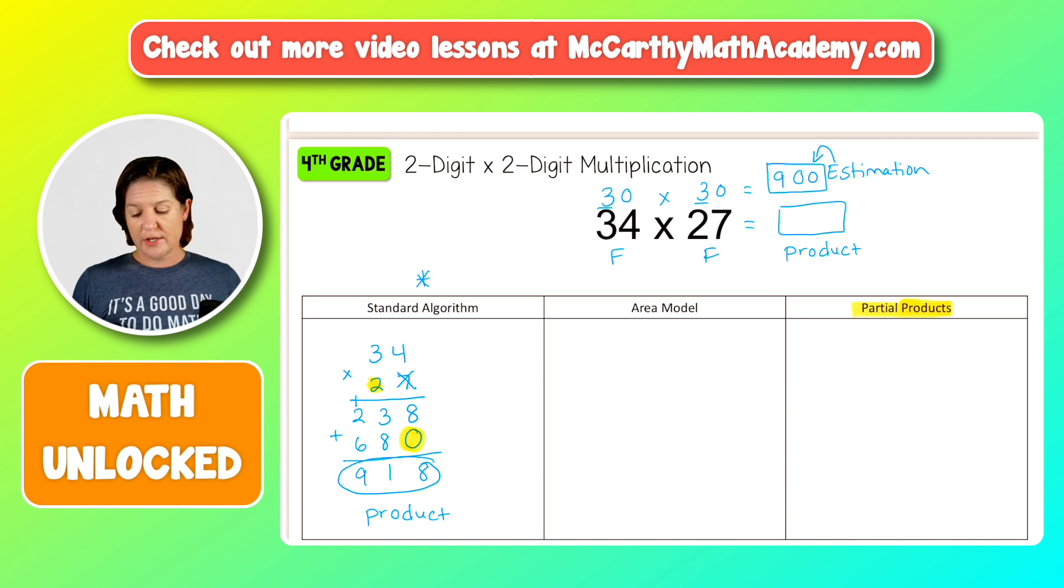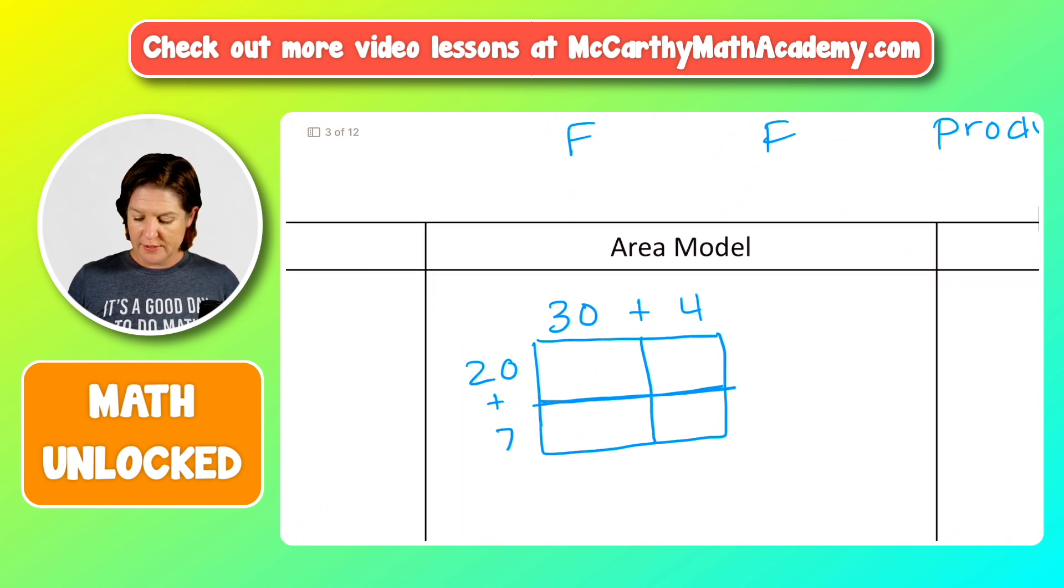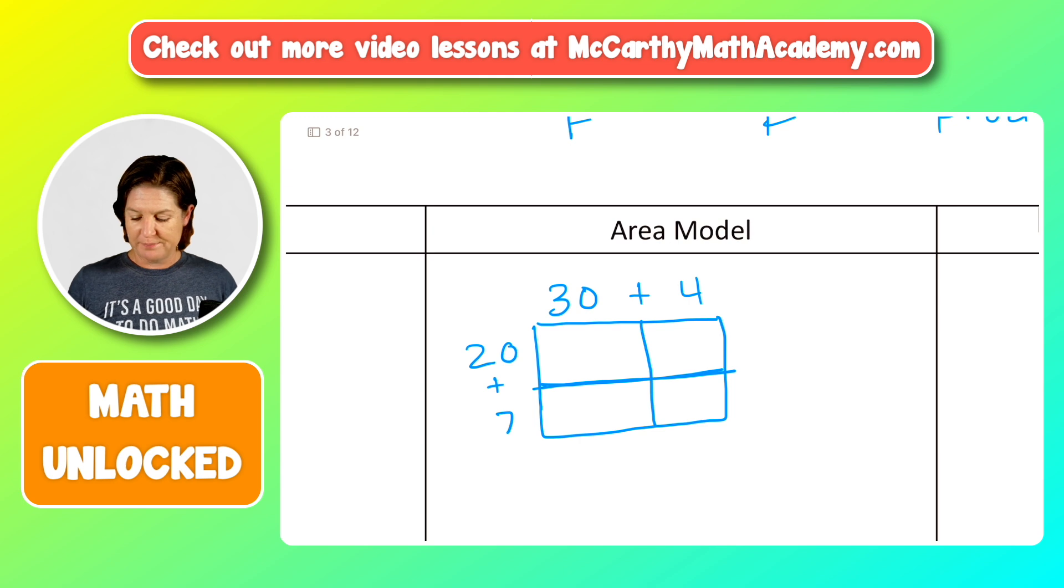There are two other strategies though, that I want to present. One is called the area model. So we're going to move on to that one next. So what we're doing with the area model is we're making little boxes and we're breaking it down. So right here we have 34. We're going to break that down into 30 and four. Then on the side we have 27. We will break that down into 20 plus seven. And then what we do is just where we have the pluses, we draw lines.